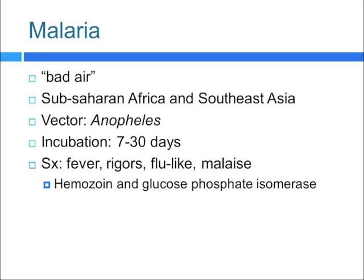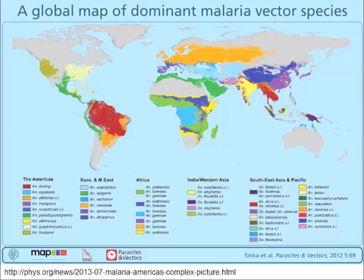Malaria itself is endemic to sub-Saharan Africa and Southeast Asia. The vector is the Anopheles mosquito, and the incubation period can range anywhere between 7 to 30 days. Symptoms include fevers, rigors, flu-like illness, and malaise. These symptoms start when the parasite develops inside the red blood cell, which explodes and releases two major proteins, hemozoin and glucose phosphate isomerase, causing a cytokine storm-type picture and the fevers.